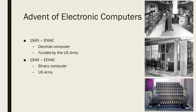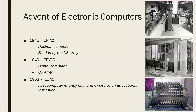Later on in 1949, we see computers which used the binary system as opposed to the decimal system — using ones and zeros to represent numbers rather than zero through ten. This was also a machine developed by the U.S. Army. And in 1952, we see the first example of a computer developed by and owned by an educational institution, right here at the University of Illinois. These were the first examples of electronic computers actually developed, and there was a very major increase in research following World War II.